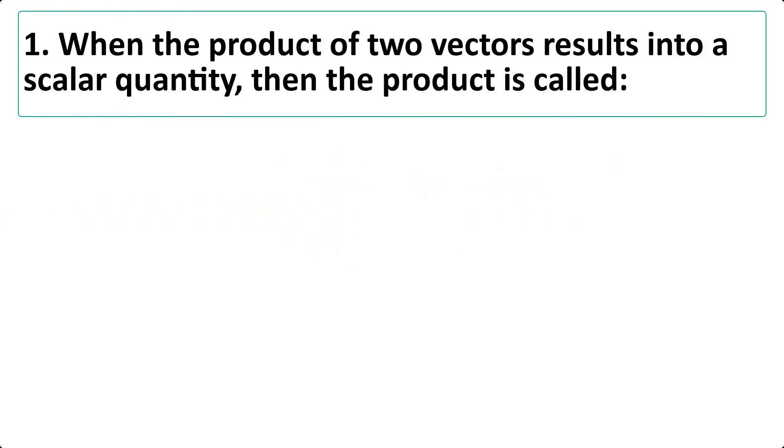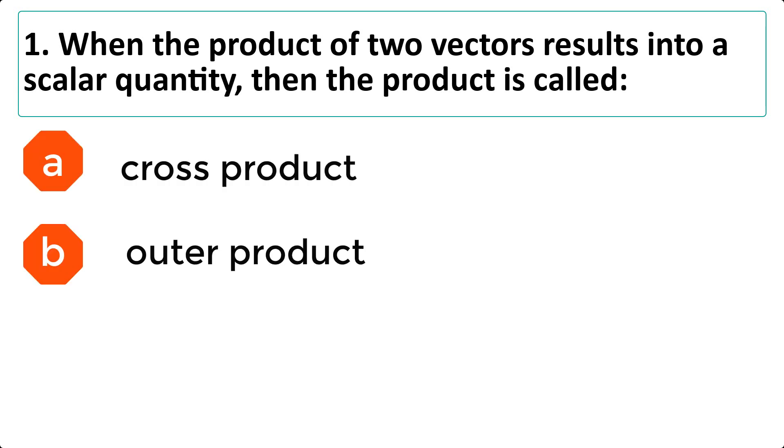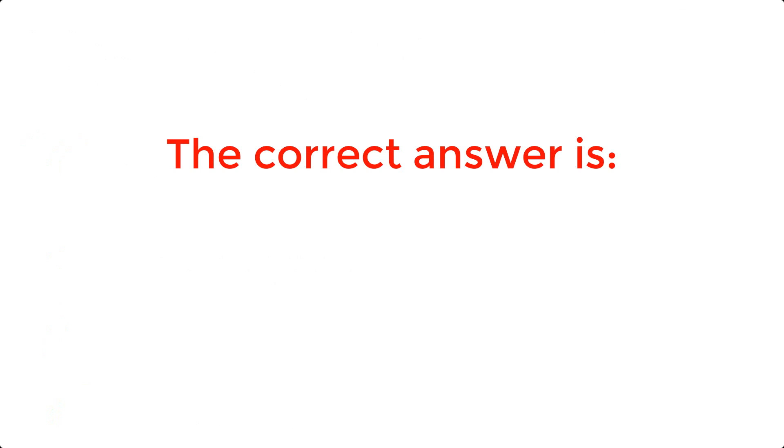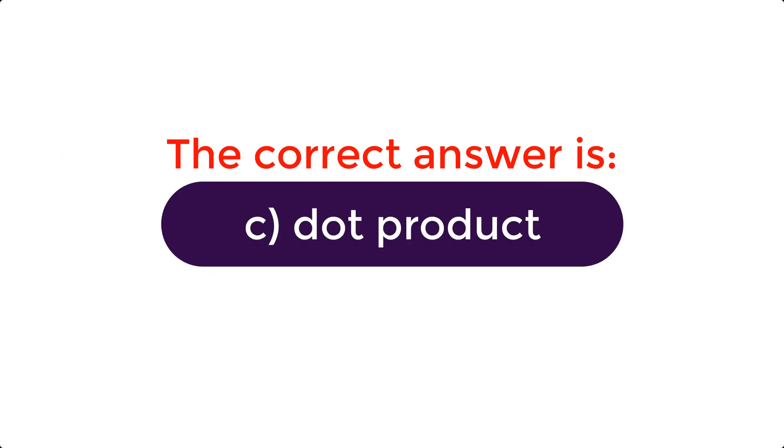When the product of two vectors results into a scalar quantity, then the product is called: A. Cross product B. Outer product C. Dot product D. All of these. The correct answer is C. Dot product.